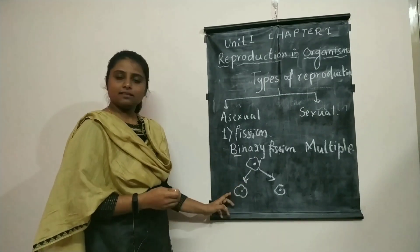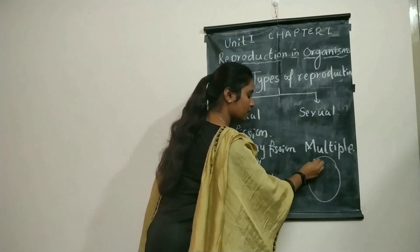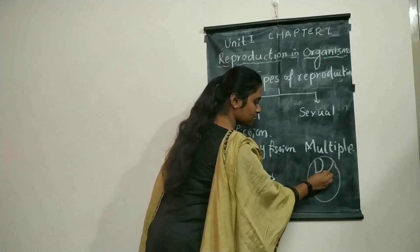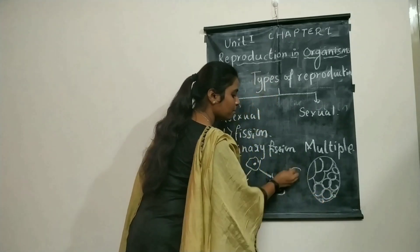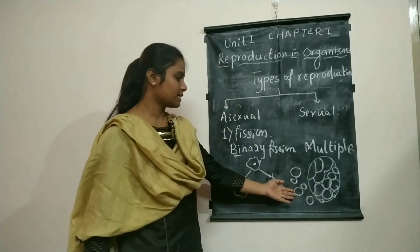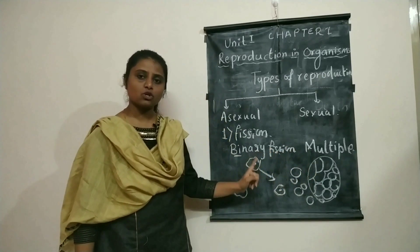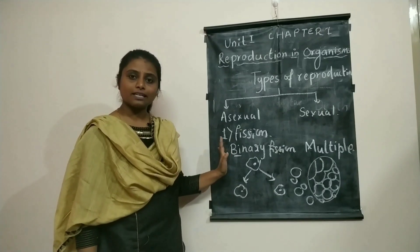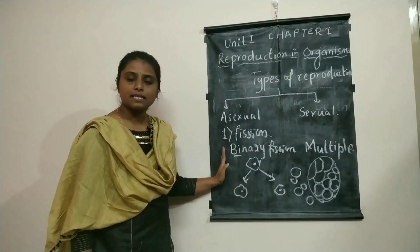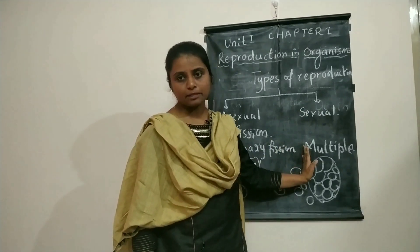We have taken amoeba as the example for binary fission. In multiple fission, a single cell divides into multiple cells, and after this the cell bursts open to release many daughter cells. It occurs in Plasmodium vivax, which causes malaria. Multiple fission also occurs in Leishmania. So the examples for binary fission are amoeba and Leishmania, and for multiple fission it is Plasmodium vivax.